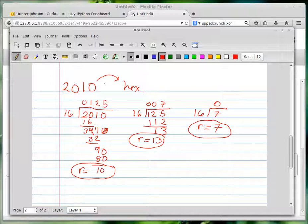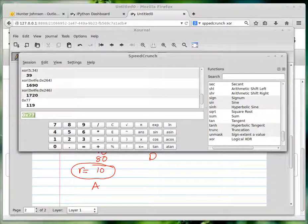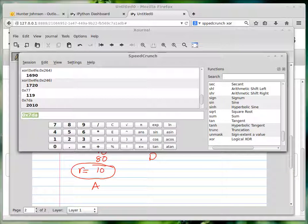The hexadecimal expression for 2010 you can read off by reading these digits backwards. So it's 0x, 7, what is 13 again? D. And this is A. So it's 7DA. You can confirm that really quickly with speed crunch. 0x7DA. And right, so it works.